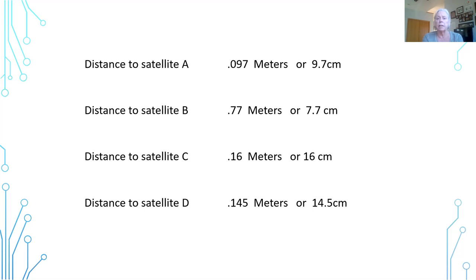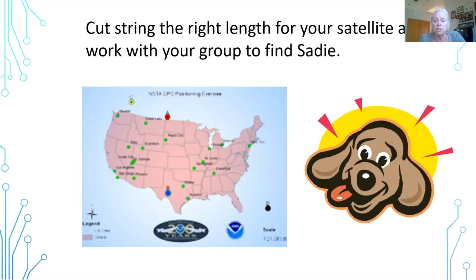I would have students work in small groups. Each person in the group gets a different satellite and measures out a piece of string. They start their piece of string at satellite A, B, C, or D and make an arc on the map. When all arcs are done, you will find that Sadie is actually in Springfield, Illinois. You can change those numbers any way you like to have Sadie be found in other places — it's pretty straightforward mathematics about map scales and GPS satellite signals.